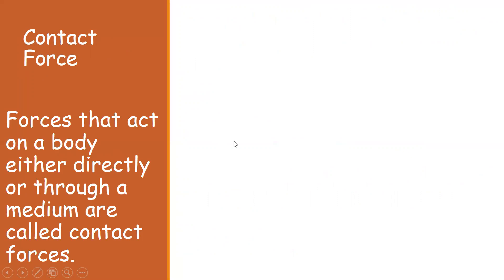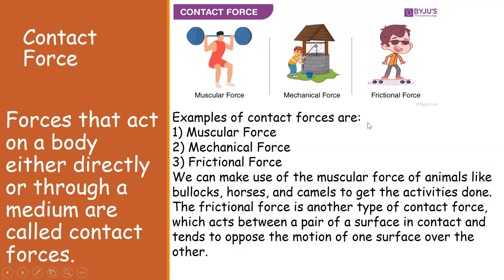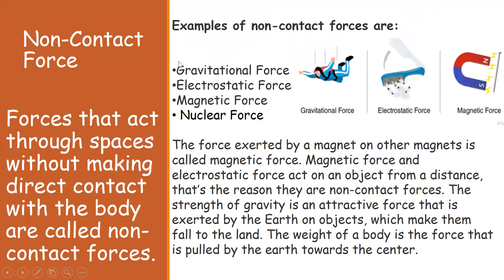Contact forces act on a body either directly or through a medium. Examples include muscular force — a man lifting weights with his hands in contact; mechanical force — using a pulley and rope to pull a bucket from a well; and frictional force — arising from contact between wheels and a surface. We also use muscular force from animals like bullocks and horses, and friction between road and tire enables a car to start or stop.